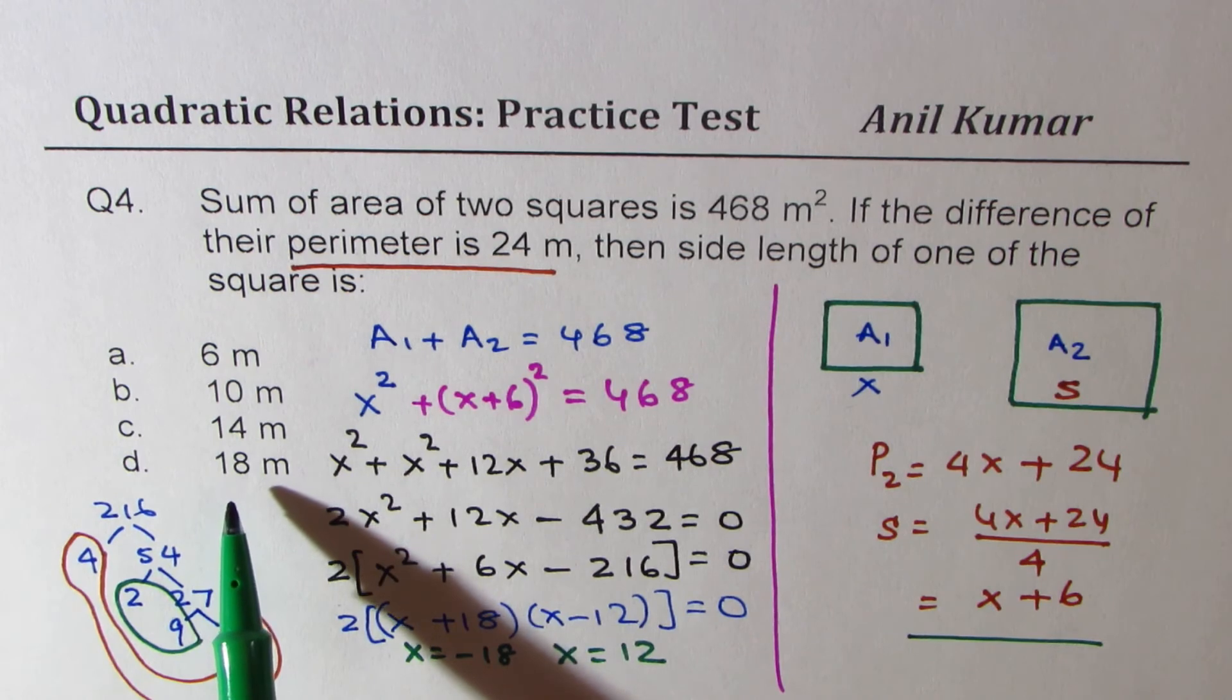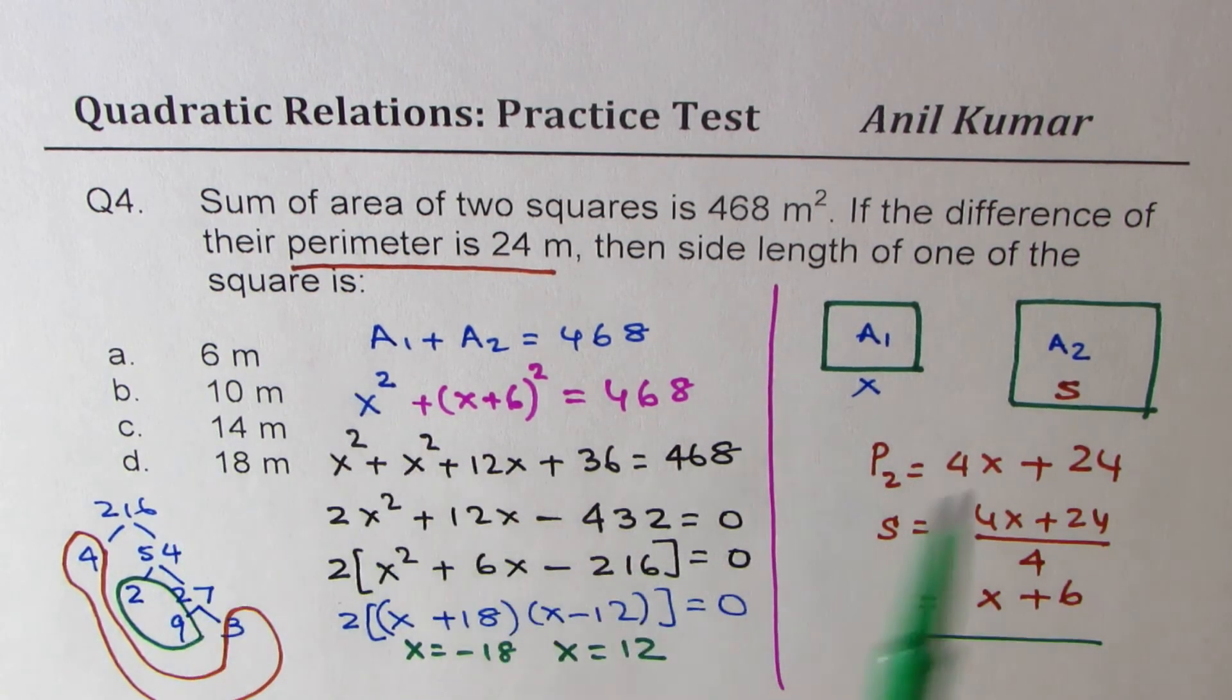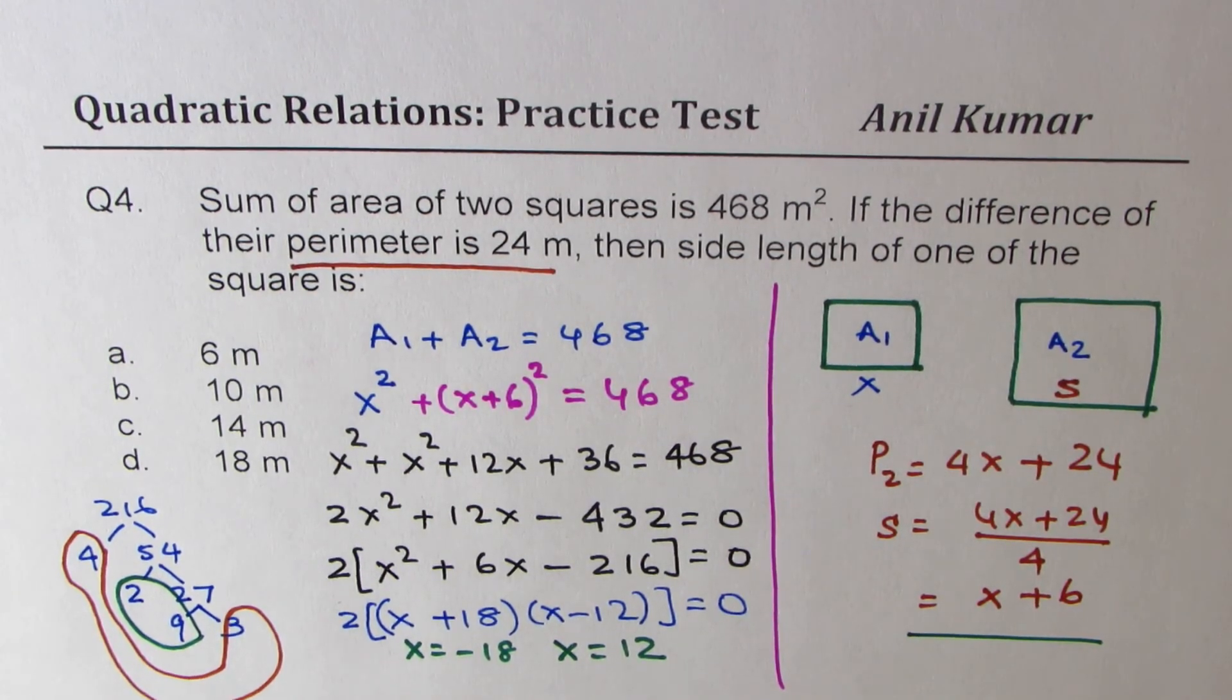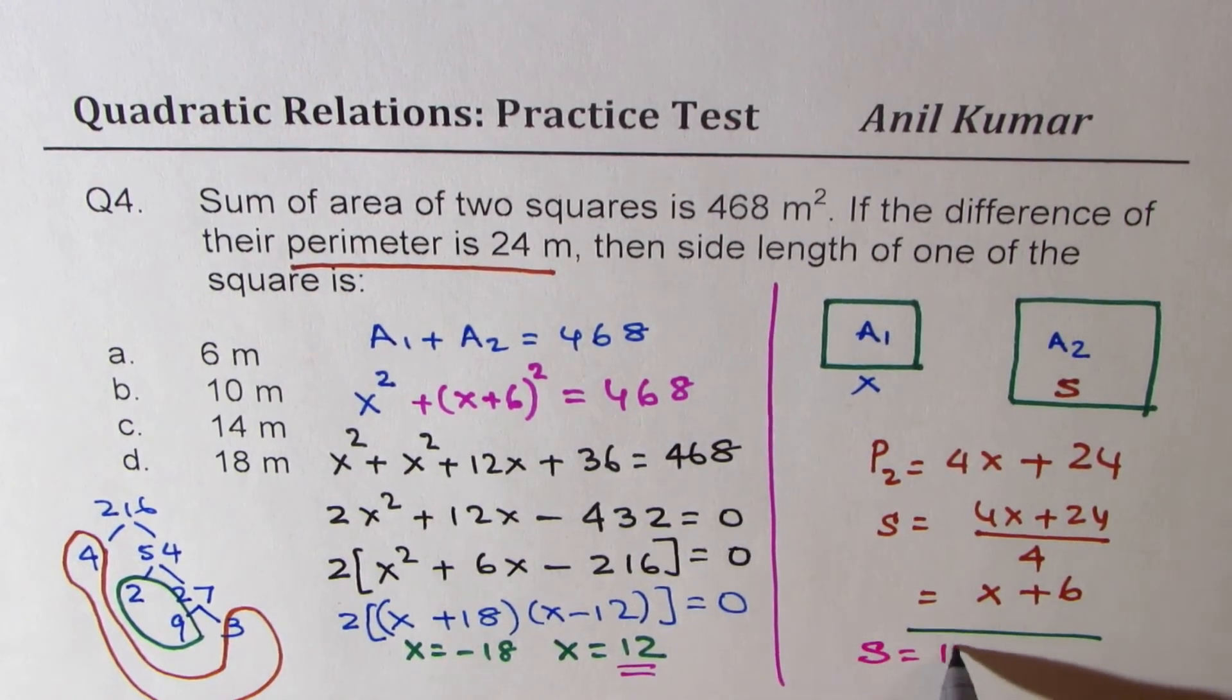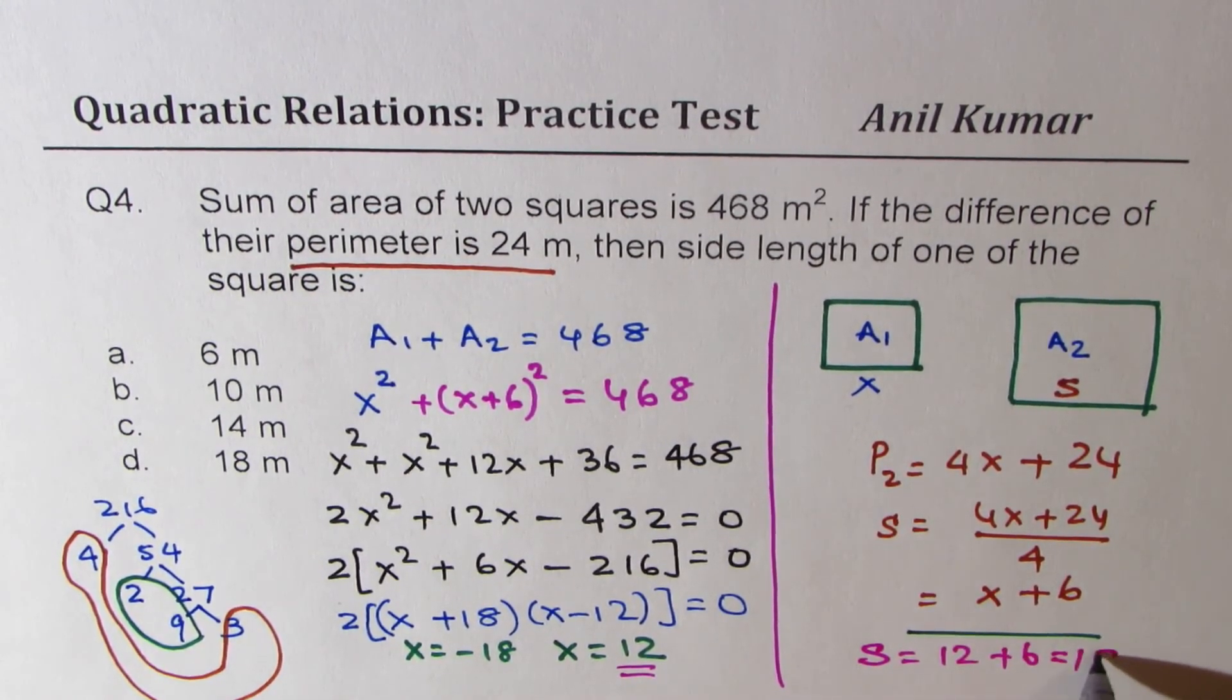We began with x. So what we found that x is 12. So s could be 12 plus 6, which is 18. And therefore option D is the right option.